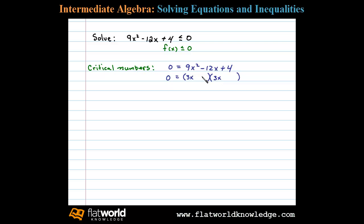4 factors as 2 times 2, and the inner and outer products add up to negative 12 if they're both negative. And then a negative 2 times a negative 2 is positive 4.